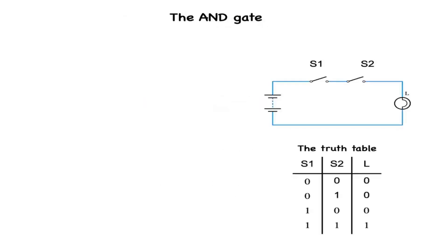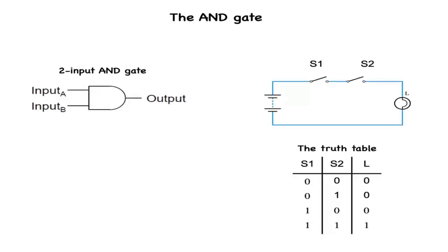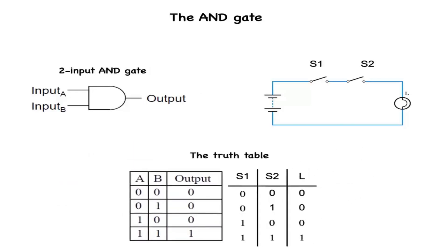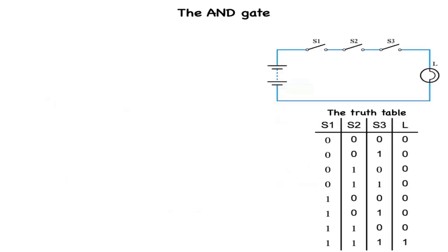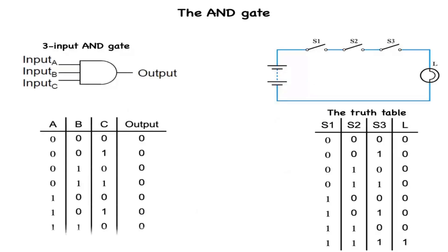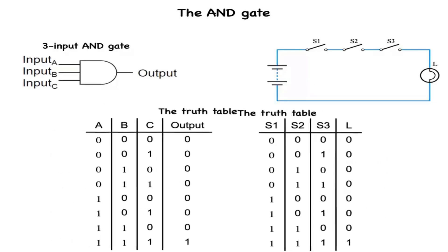Remember our series switches circuit. We can now represent this system by the standard 2-input AND gate, with the truth table which is identical to the 2-series-switch version. Likewise, remember our series circuit of 3 switches. We can now represent this system by the standard 3-input AND gate, with the truth table which is identical to the 3-series-switch version.